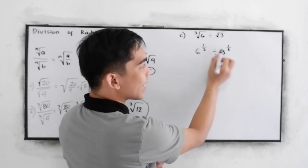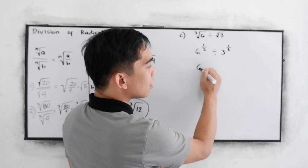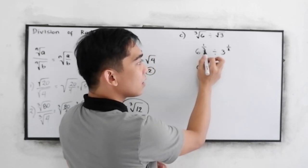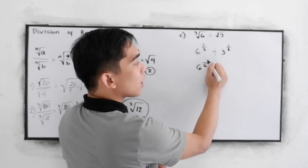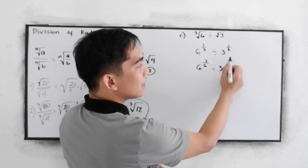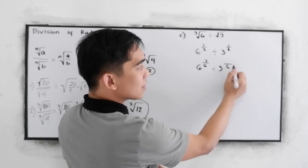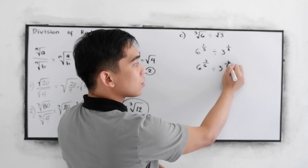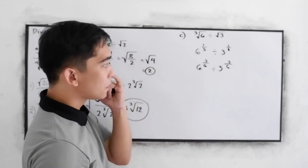Now, 3 and 2, our LCD is 6. So 6 divided by 3, that is 2 times 1, divided by 3. And 6 divided by 2, that is 3 times 1.